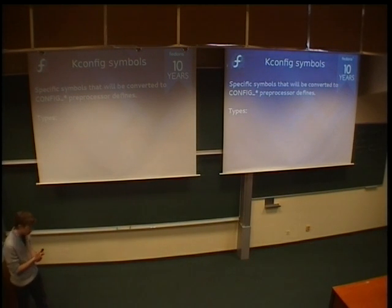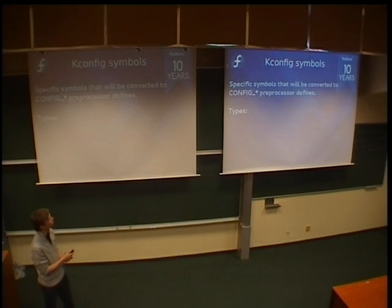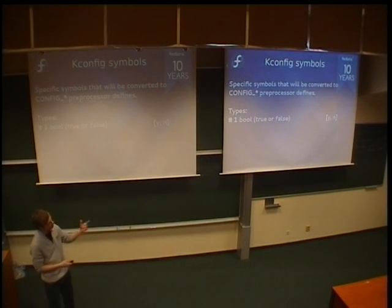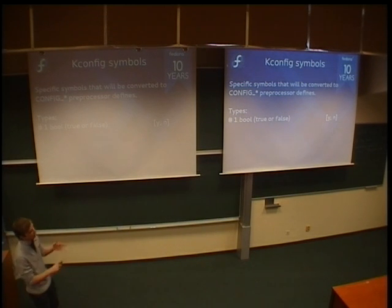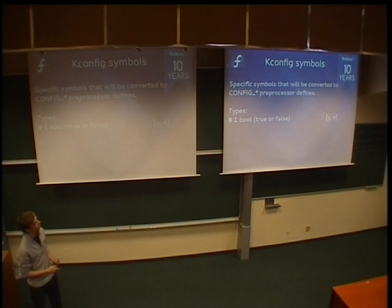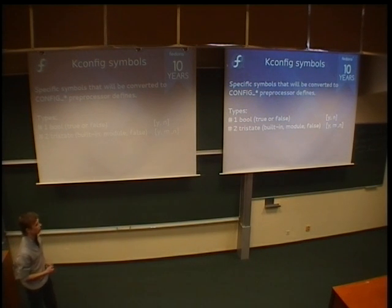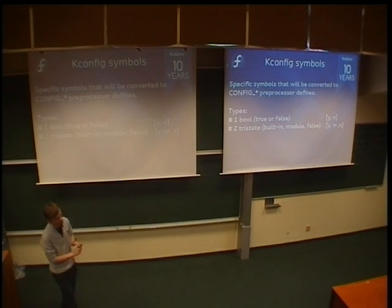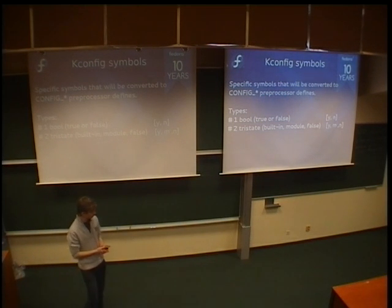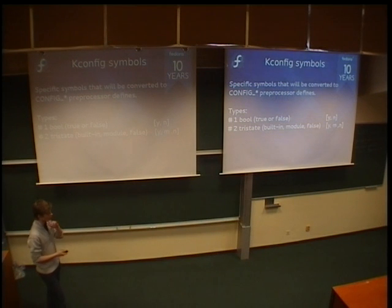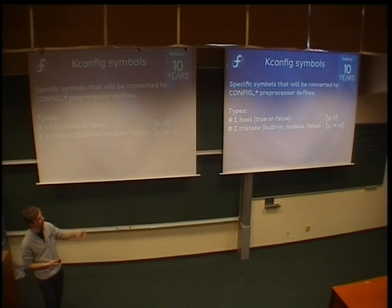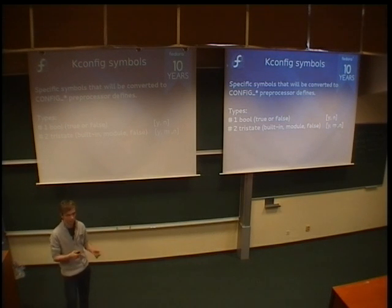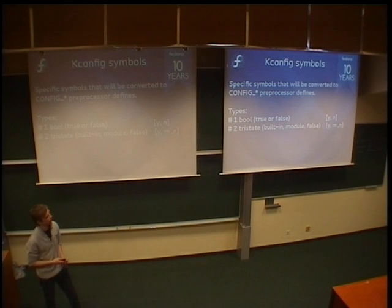We have two main types for symbols. We have bool, which can be true or false — included or not — represented as y and n. We also have tristate, which can be built-in (compiled directly into the kernel), module (included only when loaded), or false (not built at all). With false, the code is completely excluded from the build process.